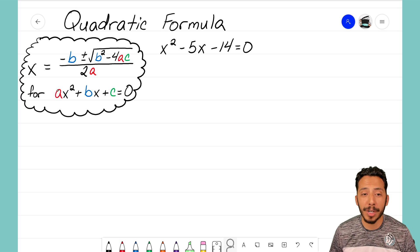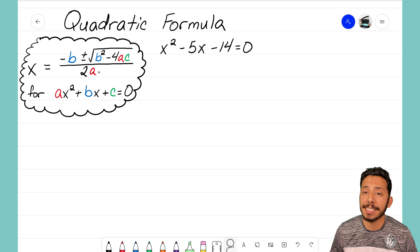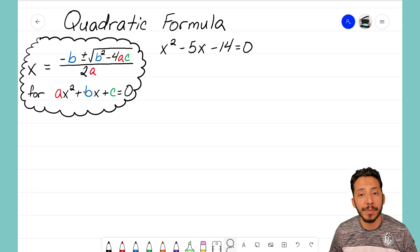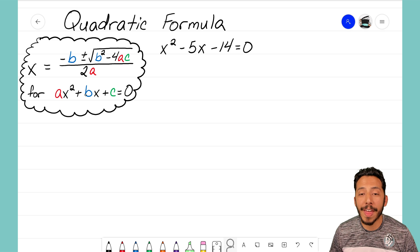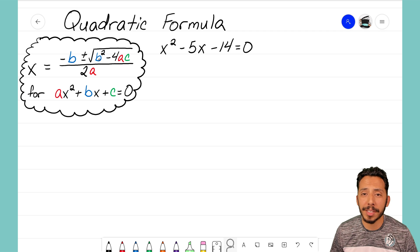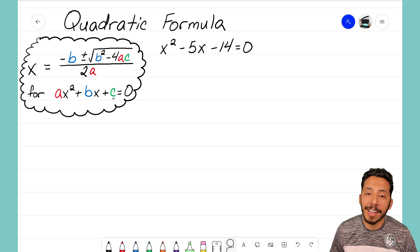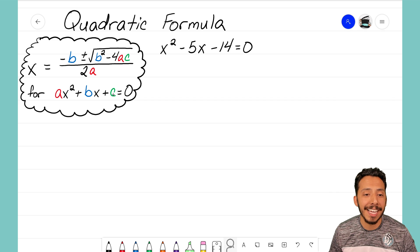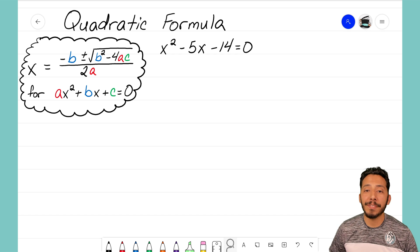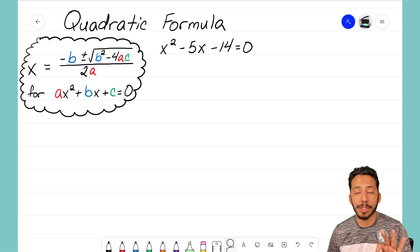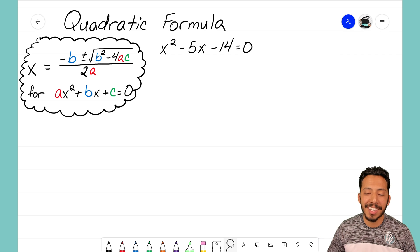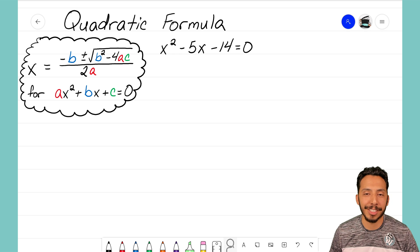This works for any quadratic formula that is written in standard form and that is equal to zero. Standard form for a quadratic equation is ax squared plus bx plus c. The quadratic equation is where we're going to get the numbers that we input into our quadratic formula. The a term is the coefficient for the x squared term, b is the coefficient for the x term, and the constant at the end, c, is the final term that we'll be putting into this quadratic formula.